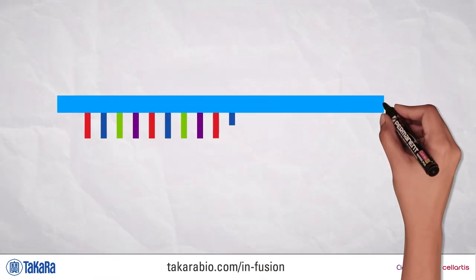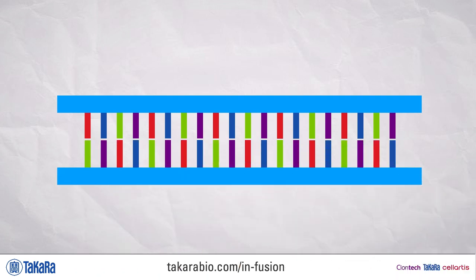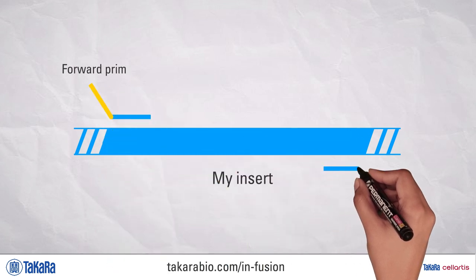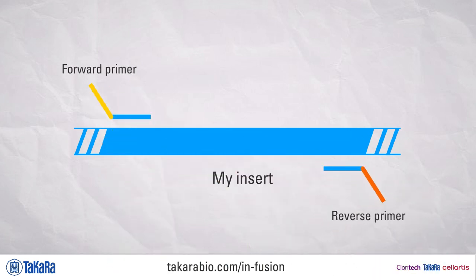Design primers with 18 to 25 nucleotides homologous to your insert and 15 nucleotide extensions homologous to the end of the linearized vector.